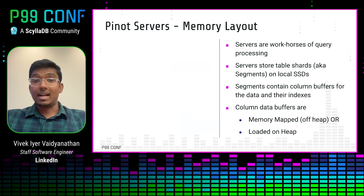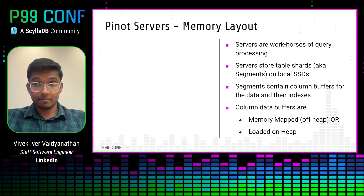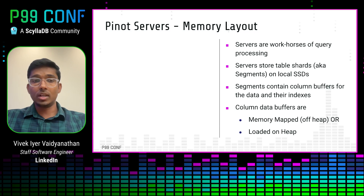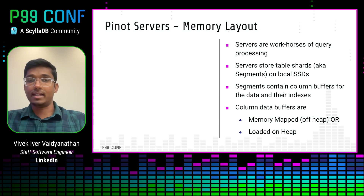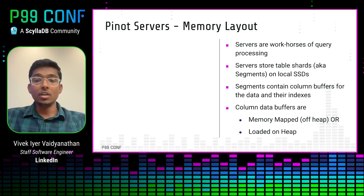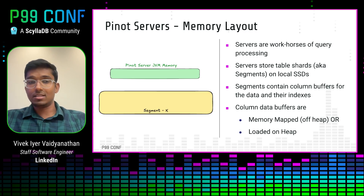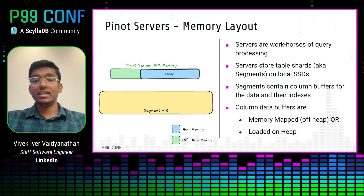It's also important to touch upon the memory layout of Pinot servers and how they process queries to set up context for the problem statement. Pinot servers store the data of your Pinot tables in units called segments — shards of a table — stored locally on SSDs or hard drives. Each shard contains multiple column buffers, which can represent either actual column data or indexes. These column buffers are either memory-mapped or directly loaded onto the heap. To illustrate pictorially, let's take an example of a segment X and the Pinot server JVM memory.